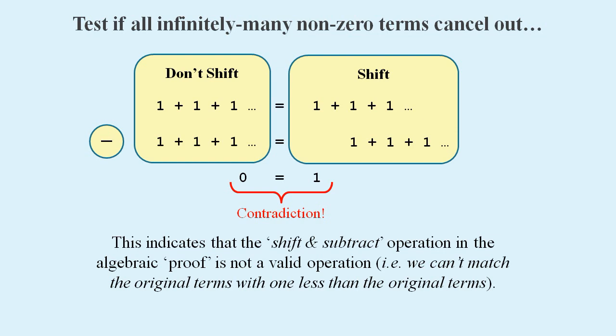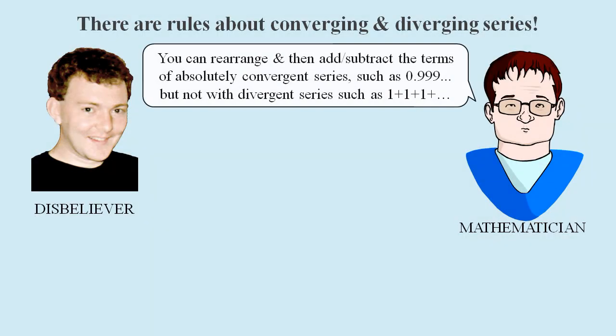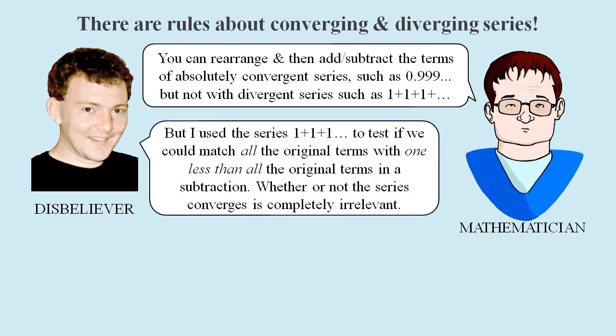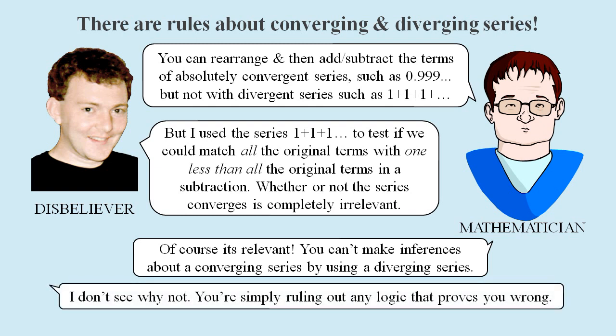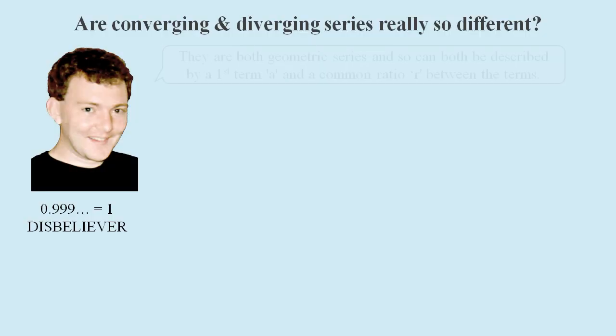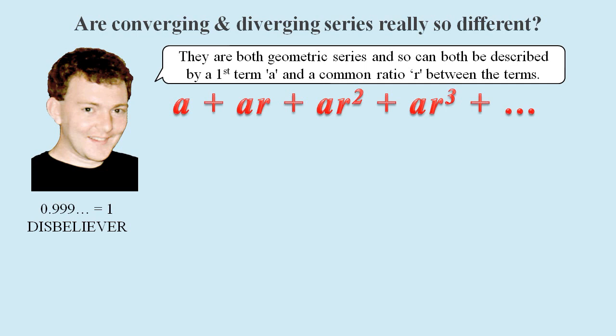Yet again the mathematicians will claim we're not following their rules. But we used the series 1 plus 1 plus 1 etc. to test the logic of matching all the original terms with 1 less than all the original terms in a subtraction. The only thing that's relevant to the canceling out is that the series is endless. But the mathematicians will claim that we can't test the logic with a divergent series, and we still can't understand why. All of these series are simple geometric series. So in that sense they all have the same structure. They just have different first terms and common ratios. And so we stand by our argument that the shift and subtract logic is completely invalid.